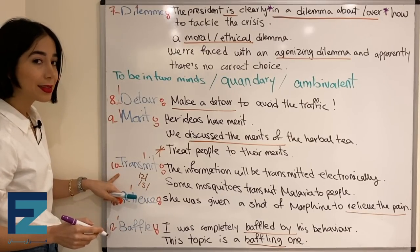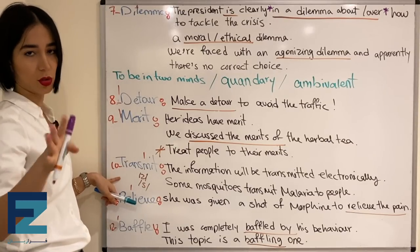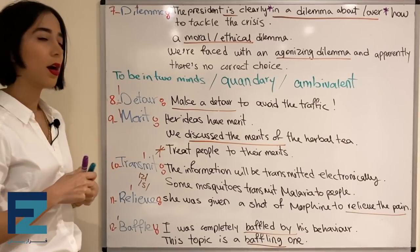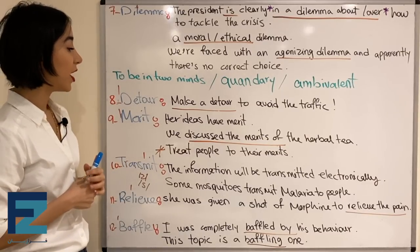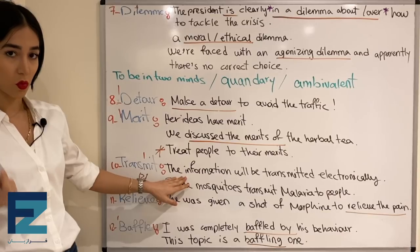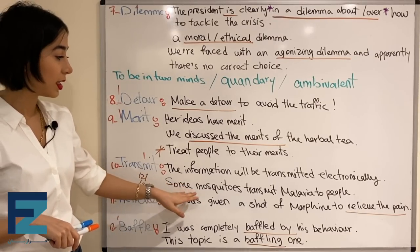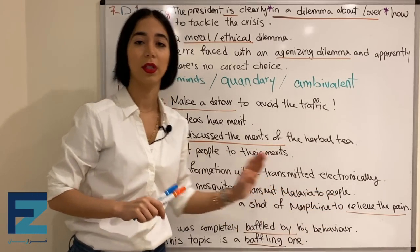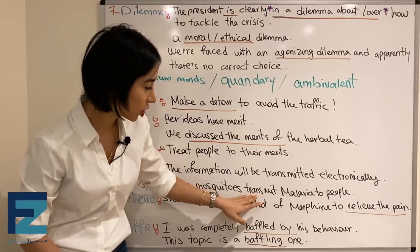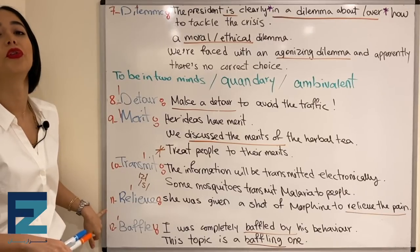Number ten: transmit — or transmit. هر دو تلفظ — American English و British English — درسته. Transmit means to send over — فرستادن. For example: 'The information will be transmitted electronically.' یعنی اون اطلاعات به صورت الکترونیکی فرستاده می‌شه. 'Some mosquitoes transmit malaria to people.' یعنی یه سری از حشره‌ها malaria رو به مردم منتقل می‌کنن.